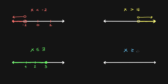Last but not least, if we have something like x is greater than or equal to negative 1, and negative 1 might be here, in this case we're going to start at negative 1 with a closed circle since it's greater than and equal to. Then we're going to be moving to the right — it looks something like this.